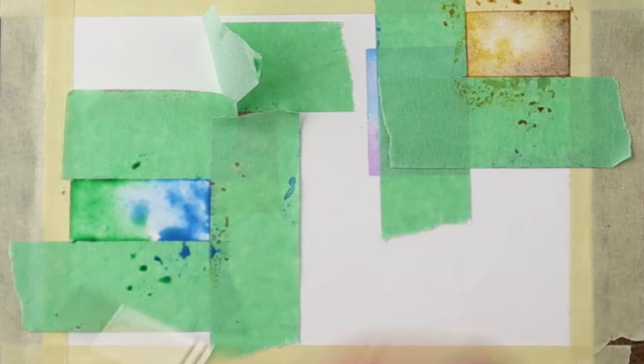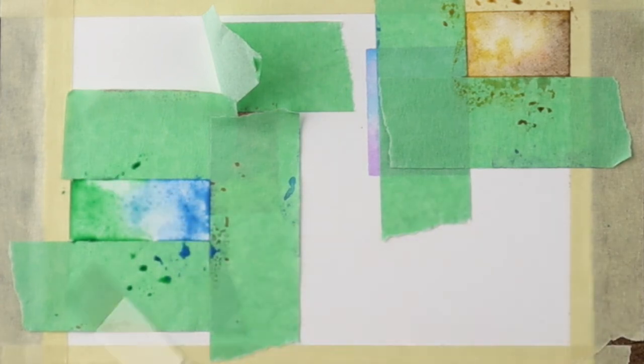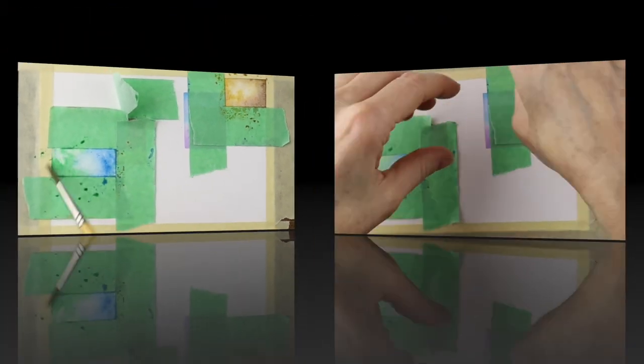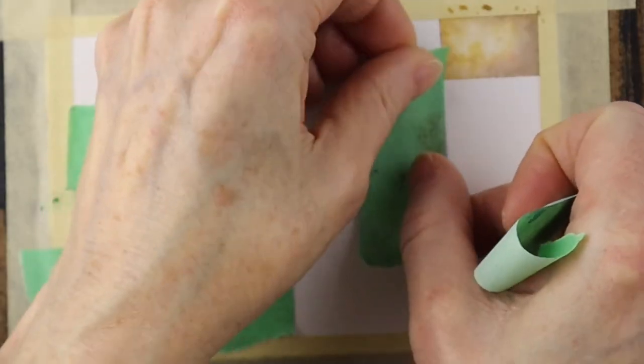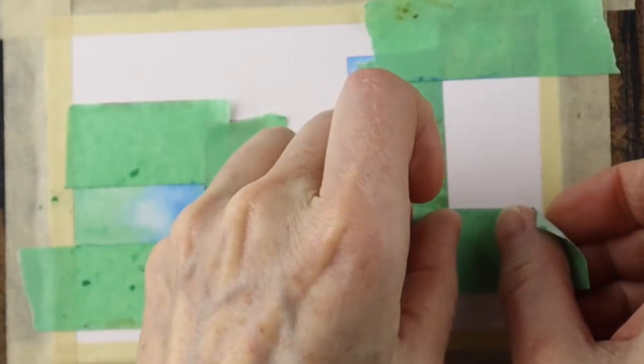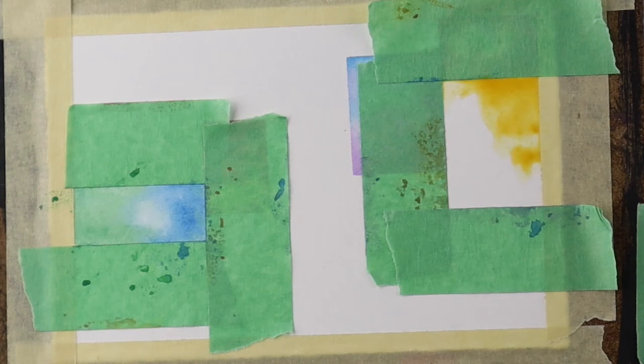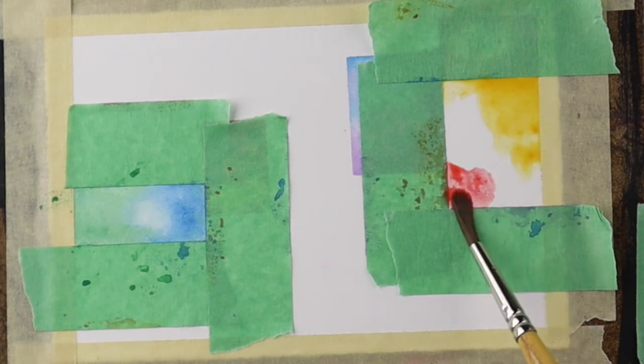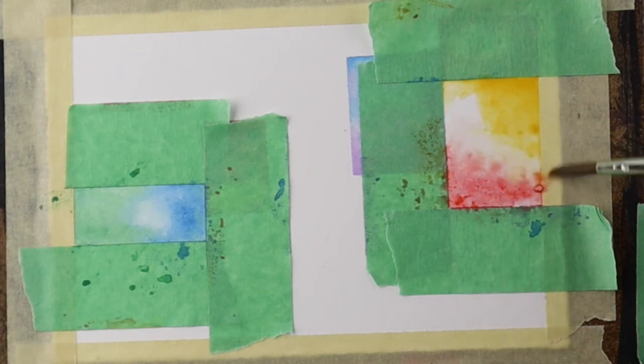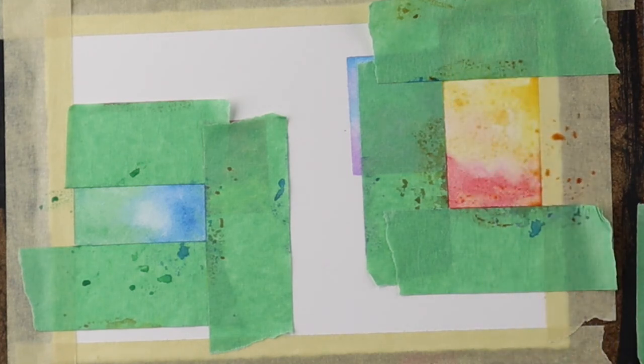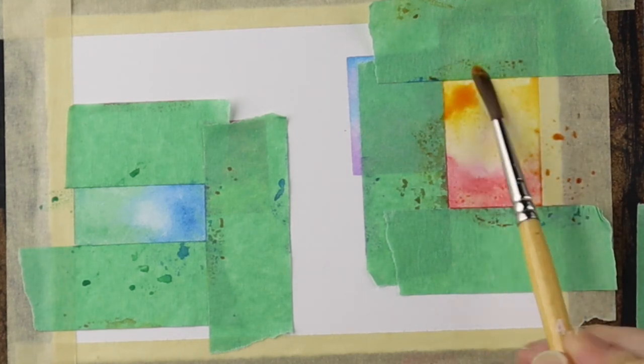And now we're just going to blend these together with our brush. If you need to add more water you can, if you need to lift the water you can. And now once they're dry you're going to replace the tape in another position and choose another color. Maybe try to give it a little variety so the colors aren't the same right beside each other, and blend these two together. This would actually be really fun to do with the salt technique as well if you want to put a little texture in there.